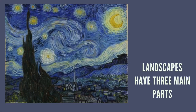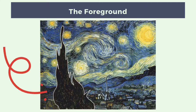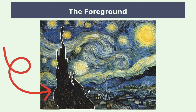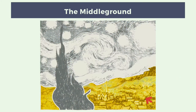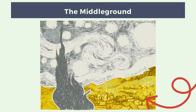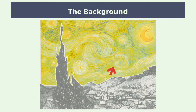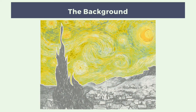Landscapes have three main parts. The foreground is right here in the front of the picture, the part that's closest to us. The middle ground is in the middle — it's near, but not as close to us as the foreground. And the background is in the back — it's far, far away.